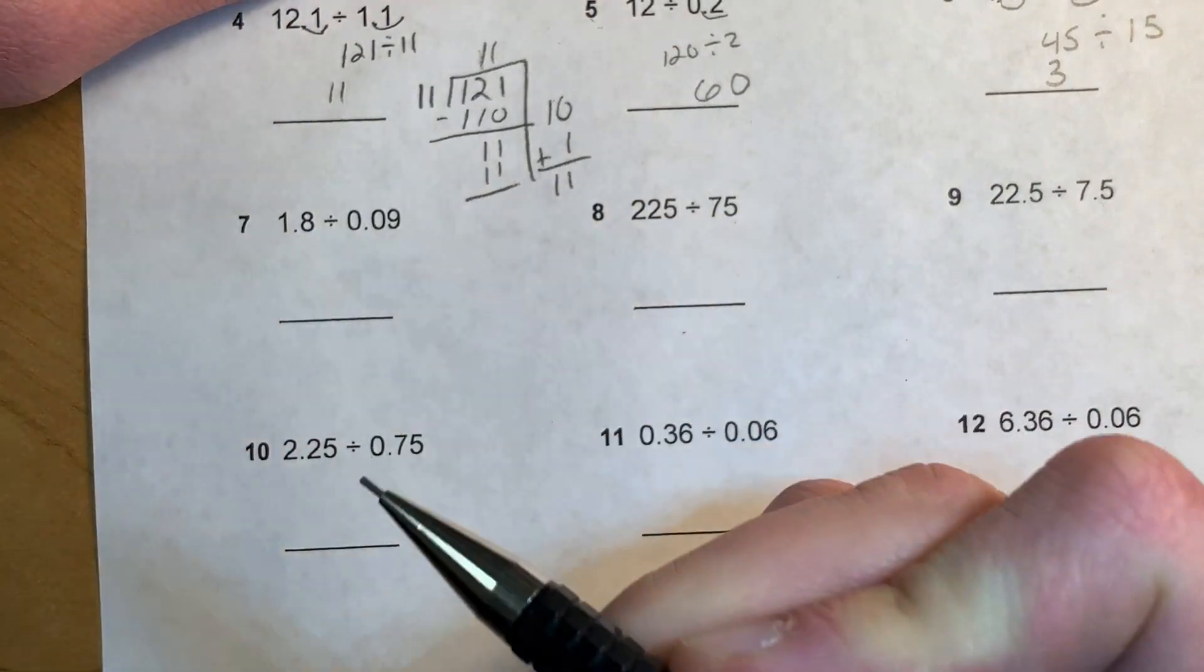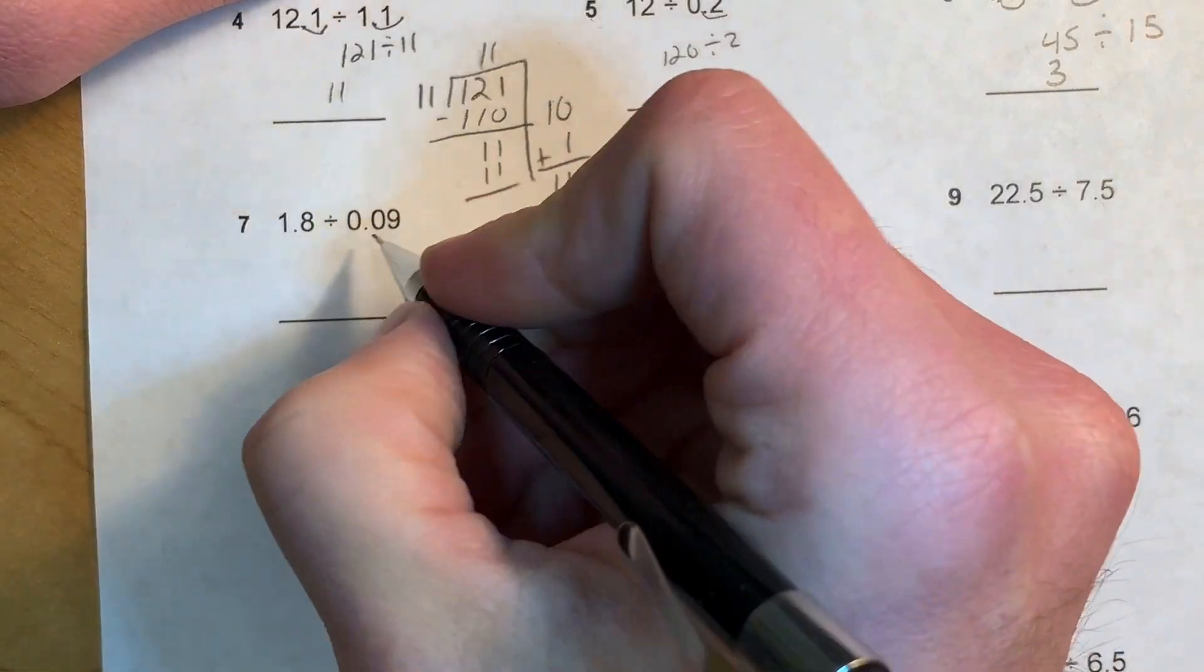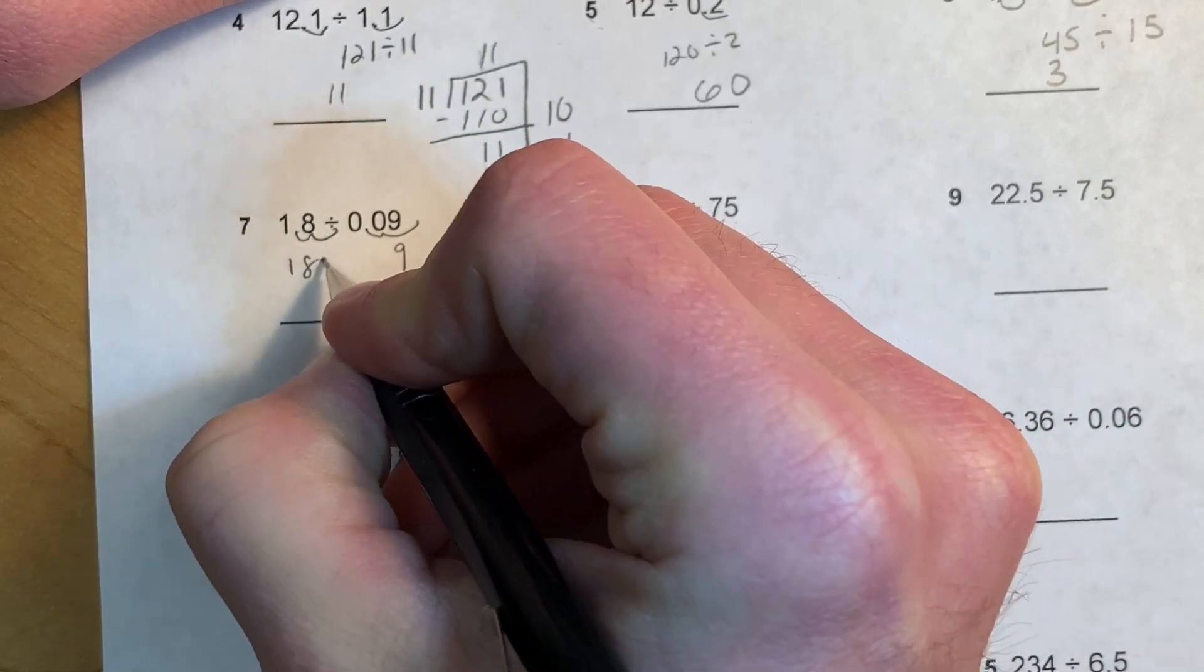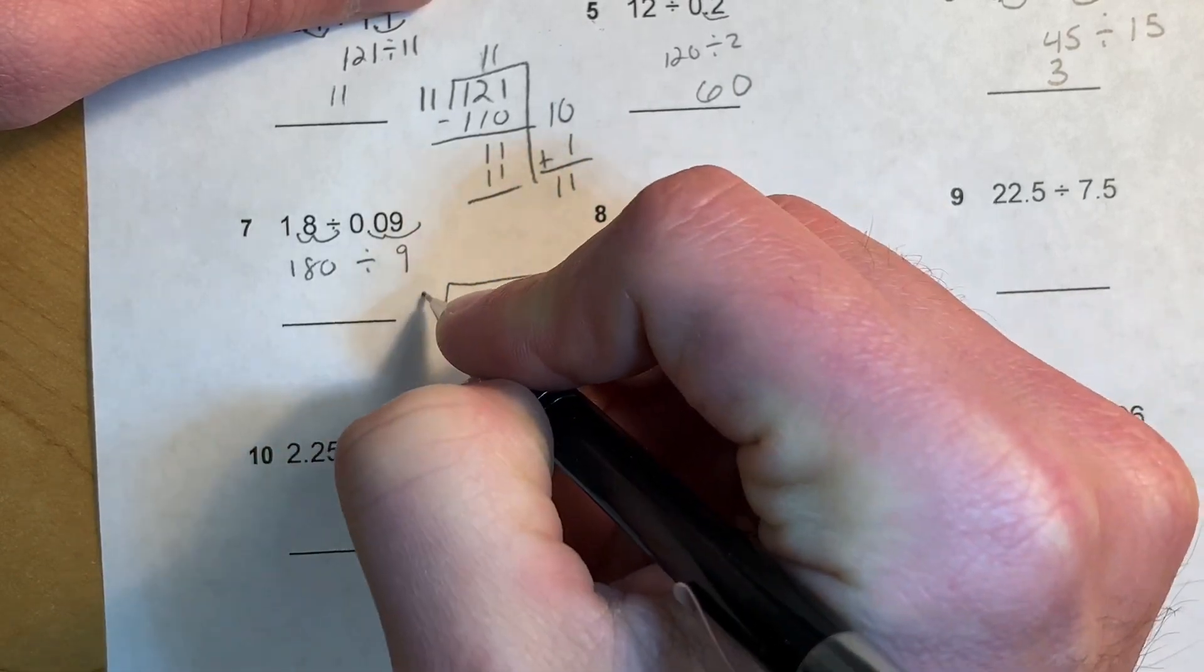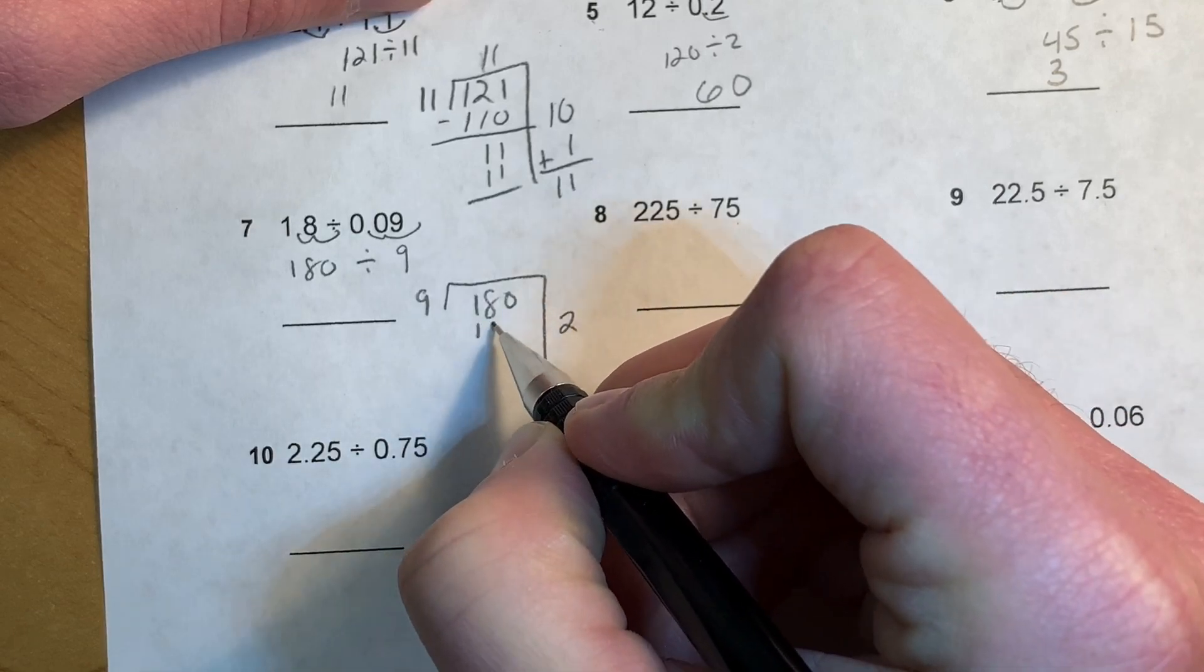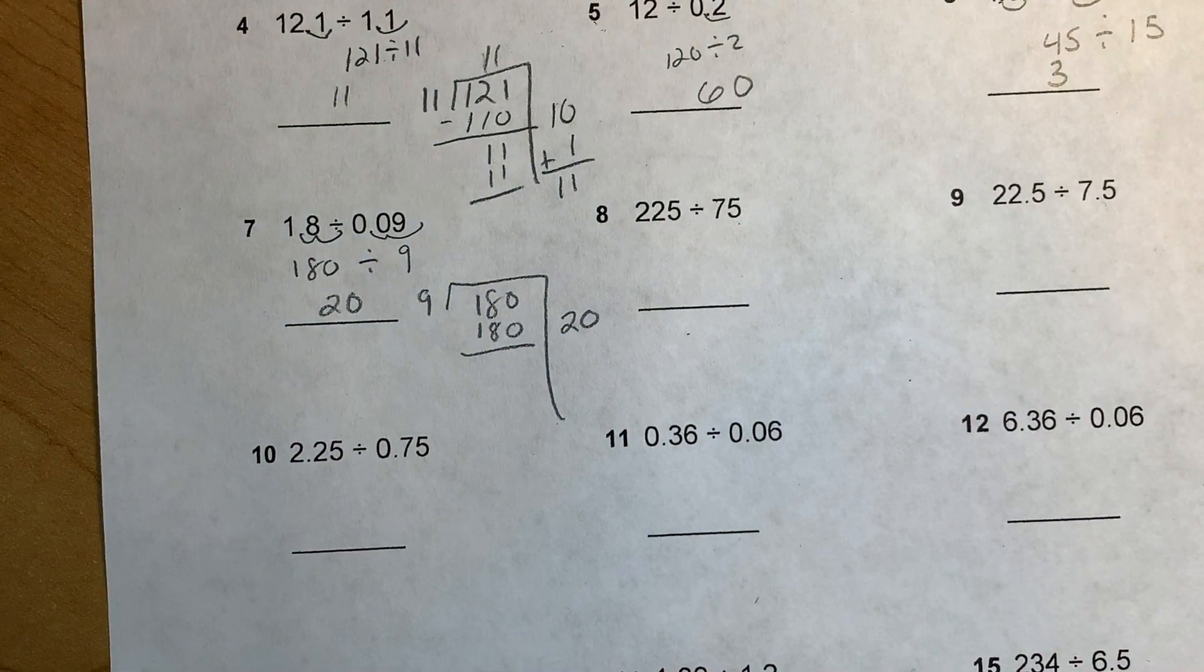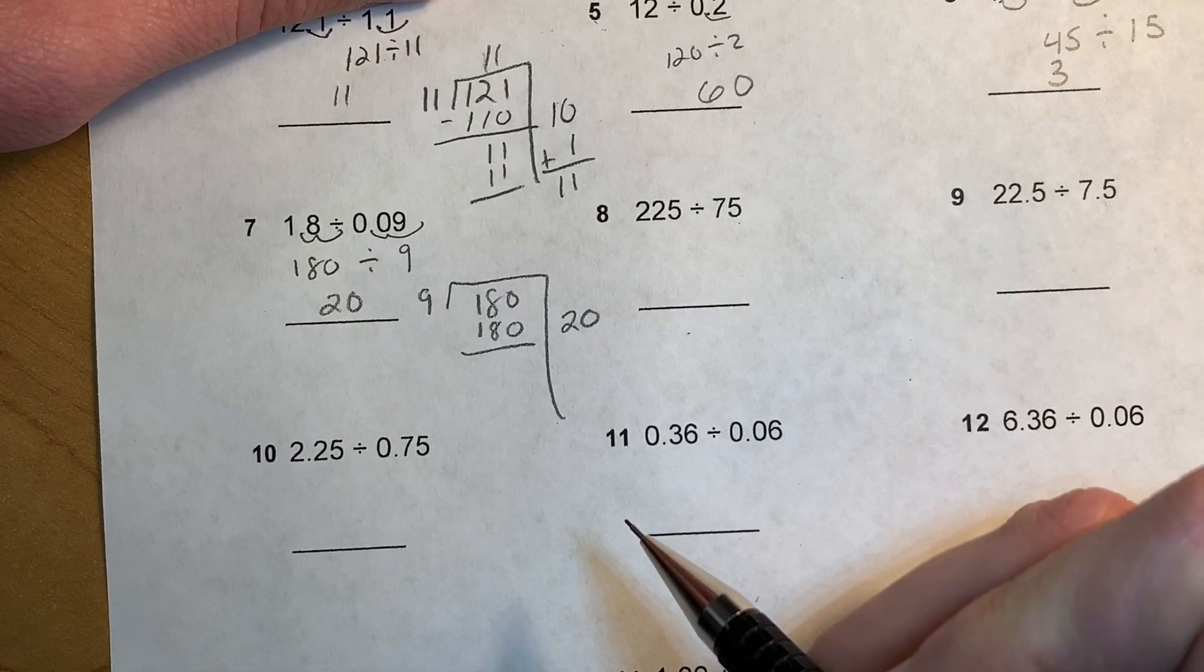This one, we have tenths and hundredths this time, so we're going to multiply both by 100. So that's just gonna be 9 and this is going to be 180 divided by 9. Partial quotient: 9 goes into 18, so that's going to be 20.